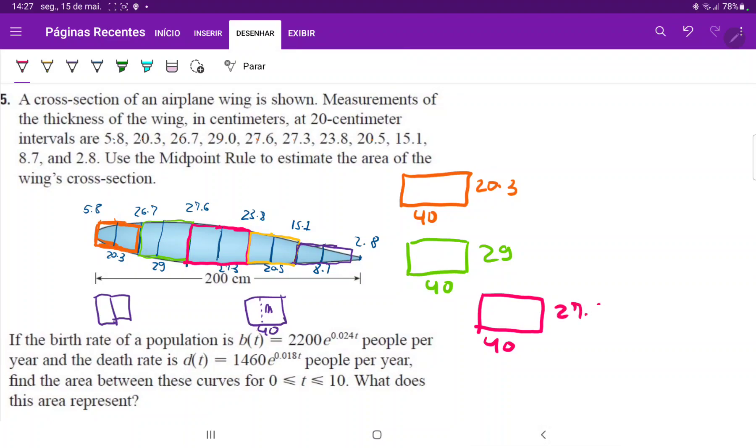The fourth rectangle was 40 and the height was, what's in the middle, 20.5. And lastly, the fifth rectangle, the base was 40 and the height was 8.7.